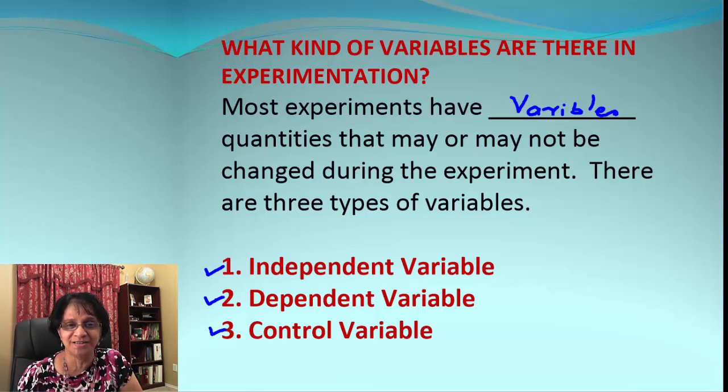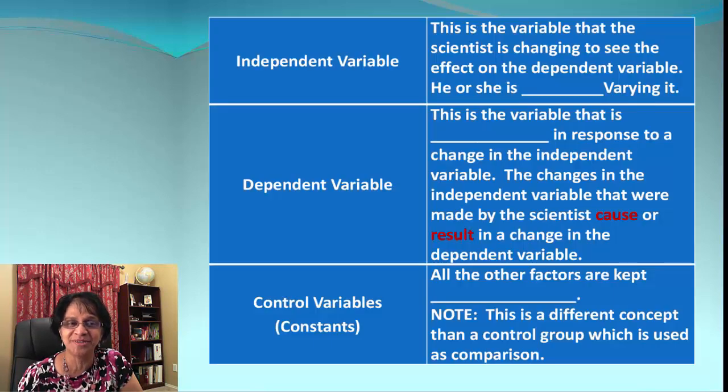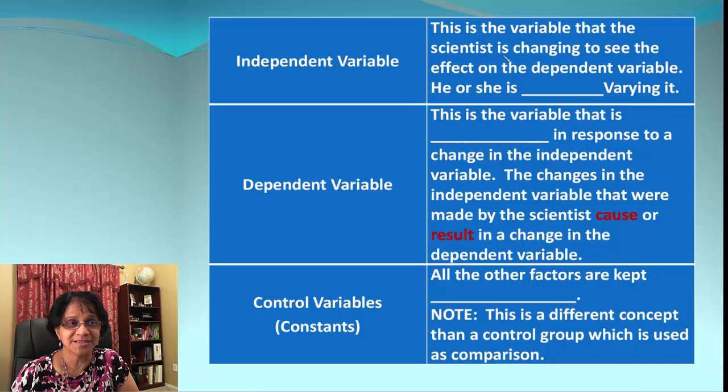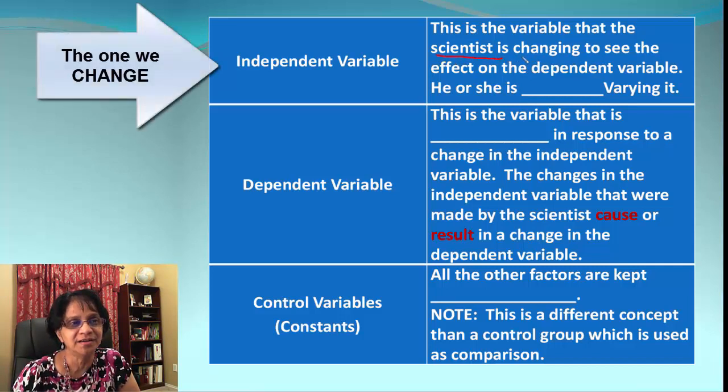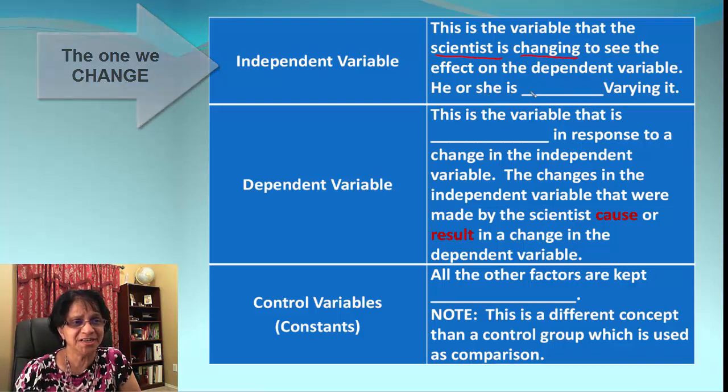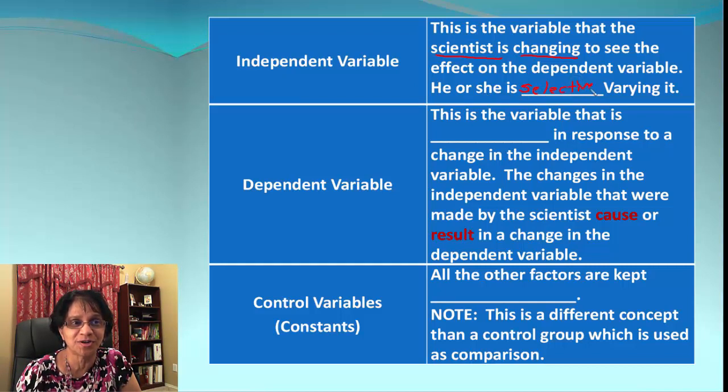What is independent variable? This is the one which a scientist independently decides to change. You can say he or she is selectively varying it, changing it for the experiment.